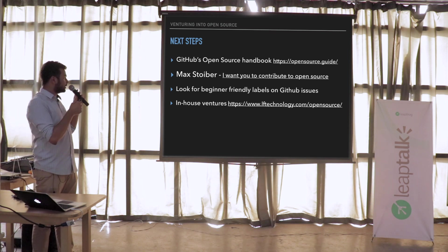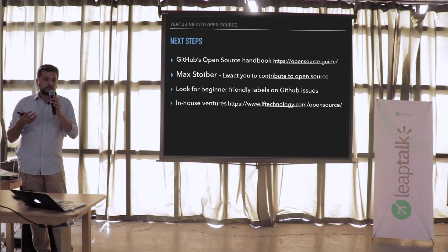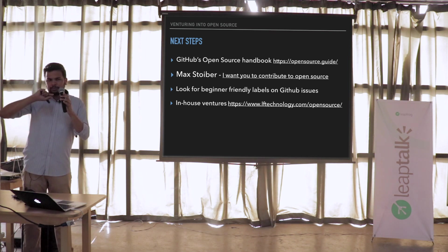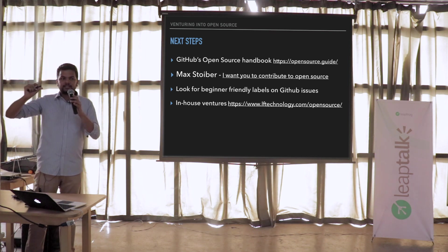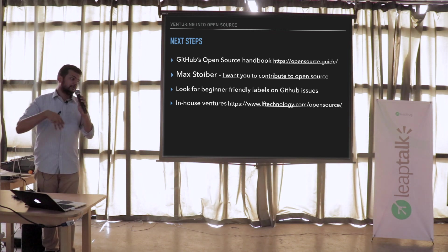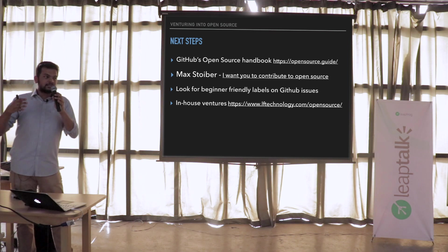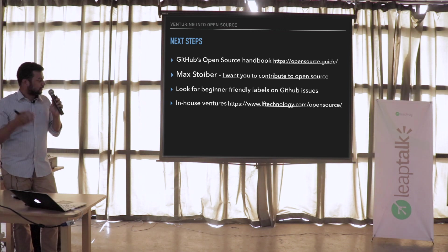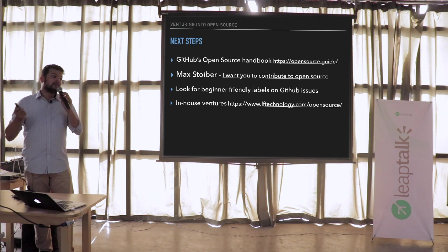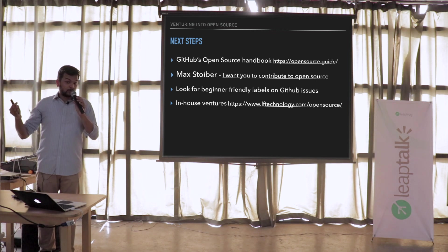Another really good thing is to look for beginner-friendly labels on GitHub issues. All of you know GitHub and the issue system — you can put labels on issues, and even big projects like React have a standard where you place labels like 'beginner friendly' or 'good first issue.' The issues are so descriptive that they tell you exactly what needs to be changed — maybe it's just a readme change, maybe five lines of code, and they'll tell you exactly which five lines. Everyone started with a readme change, everyone started with fixing one line of code or adding a semicolon. Start with beginner-friendly issues and move on from there.